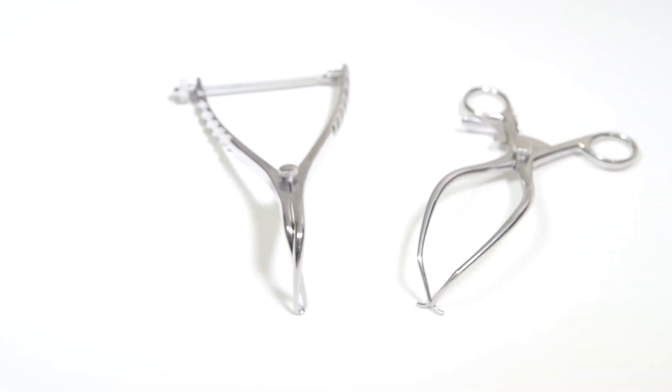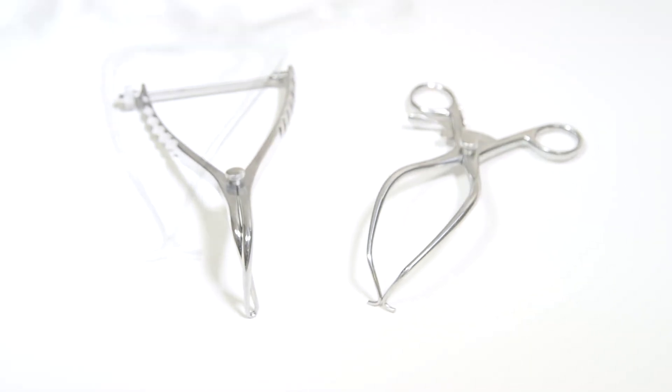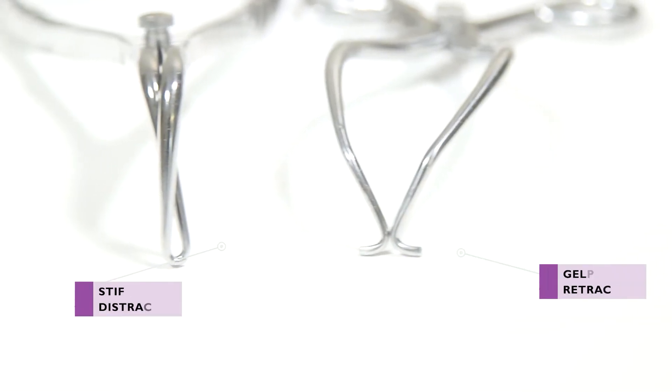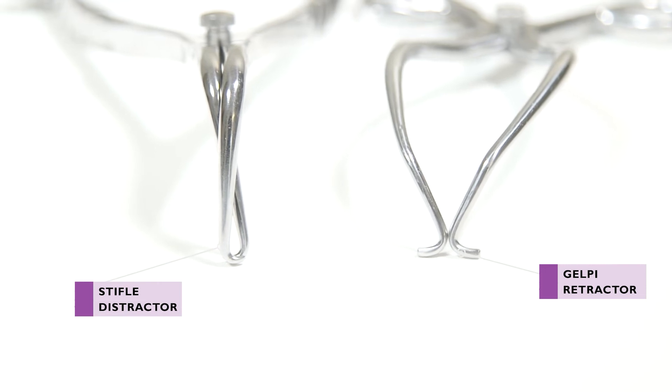A gelpie is similar in appearance to a stifle distractor. The key visual difference is that the tips of the gelpie do not cross over when the jaws of the device are closed.